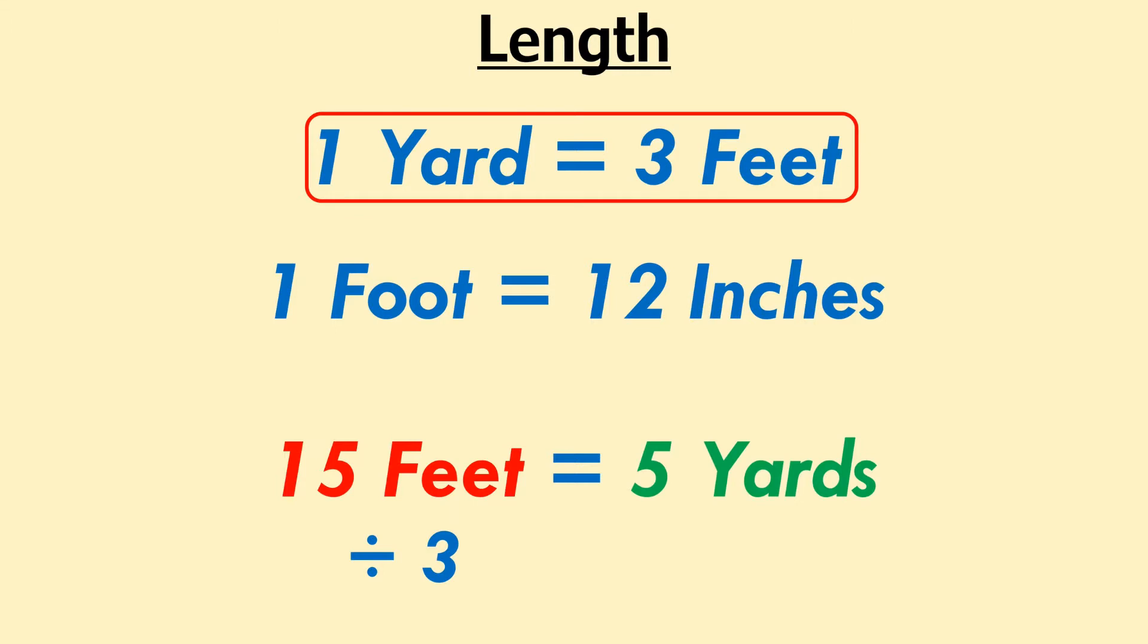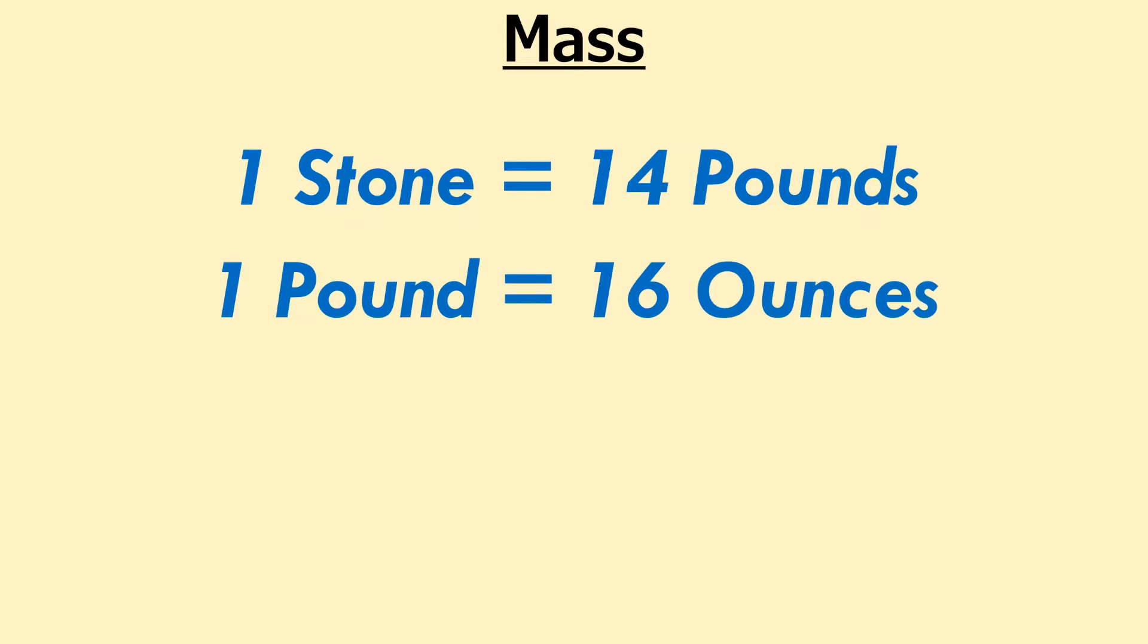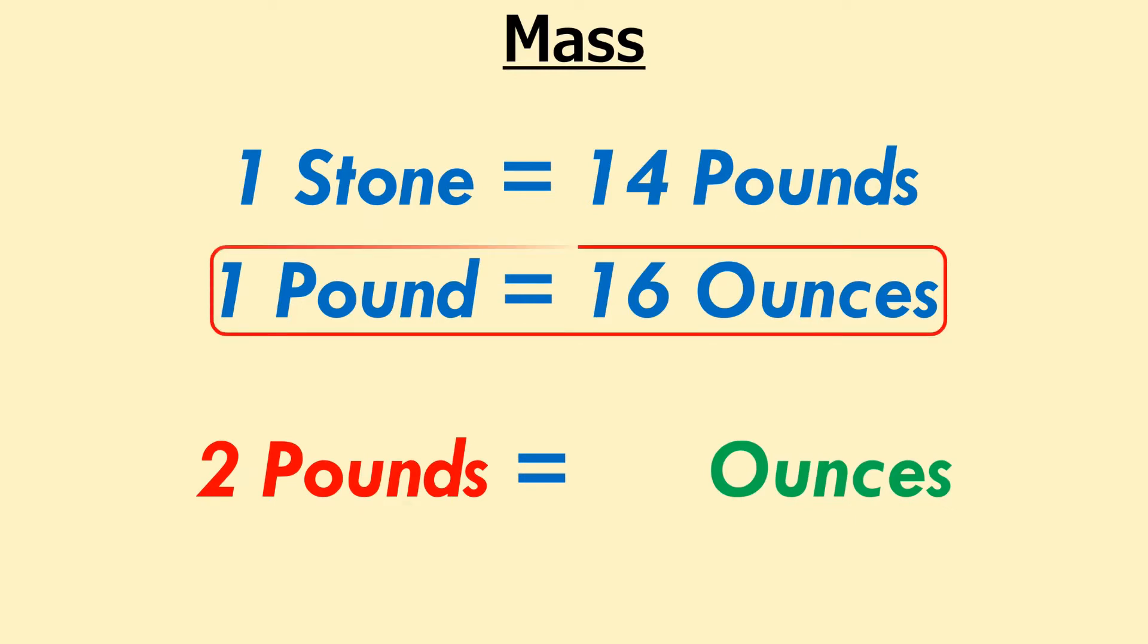On to mass. One stone is 14 pounds, and each pound is equal to 16 ounces. Now, how many ounces are there in 2 pounds? Each pound has 16 ounces, so multiply 2 by 16 to give 32 ounces.